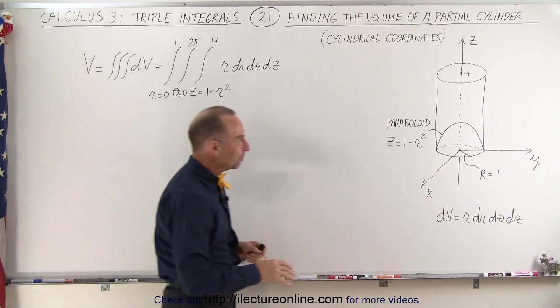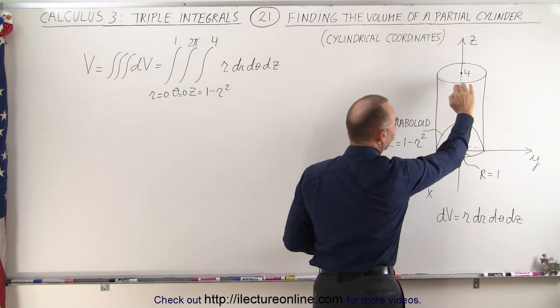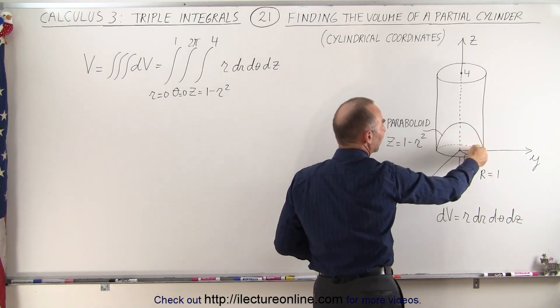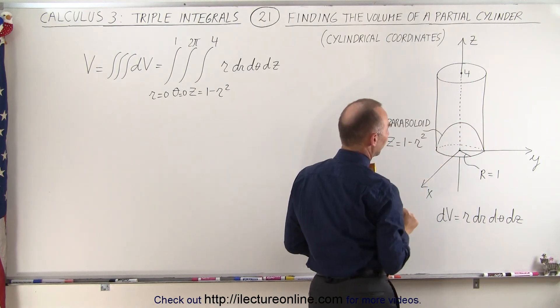Here we're going to try to find the volume that's enclosed by this cylinder and anything above this paraboloid that cuts out the bottom of the cylinder right here.